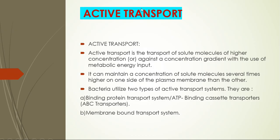Coming to active transport: the term 'active' implies energy expenditure. When bacteria want this kind of nutrient transport, they must spend metabolic energy in the form of either ATP or a proton gradient. Active transport is the transport of solute molecules against a concentration gradient — from lower to higher concentration — using metabolic energy input. It can maintain solute concentrations several times higher on one side of the plasma membrane than the other.